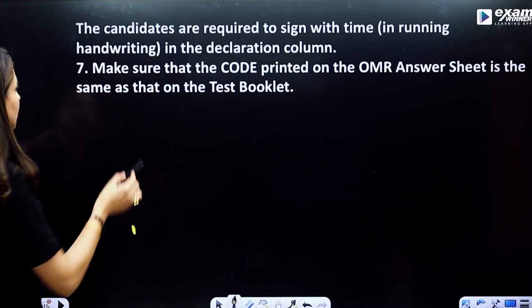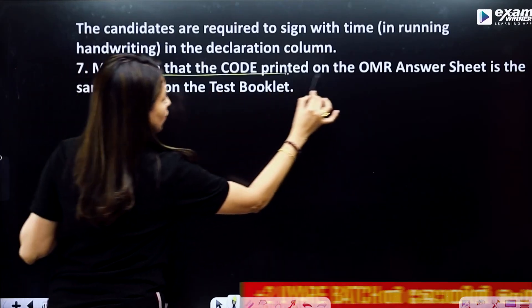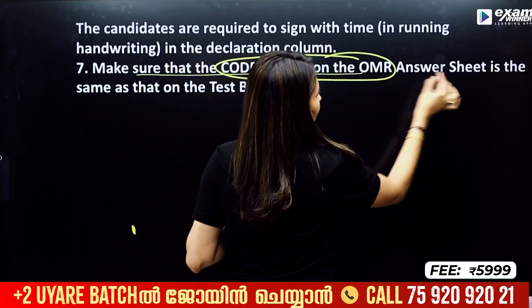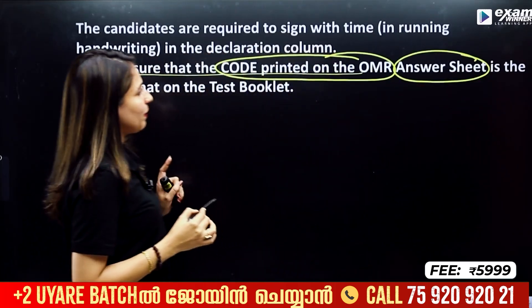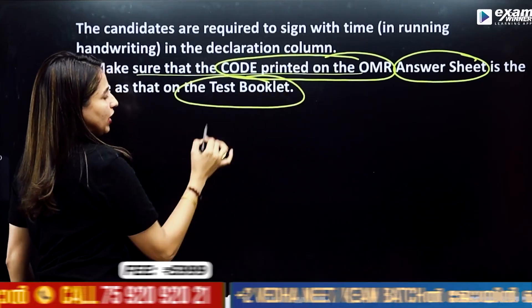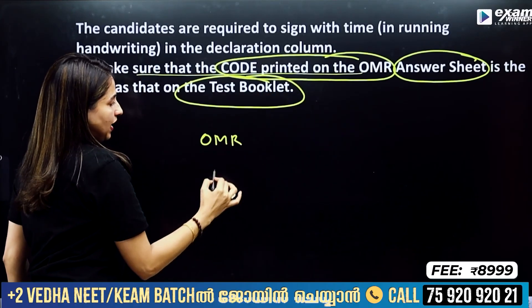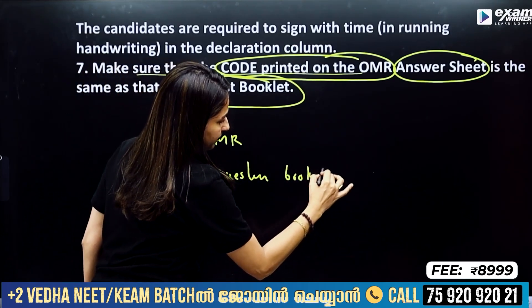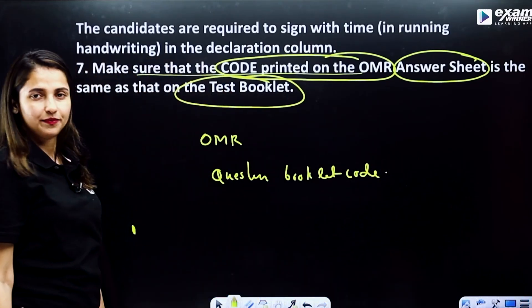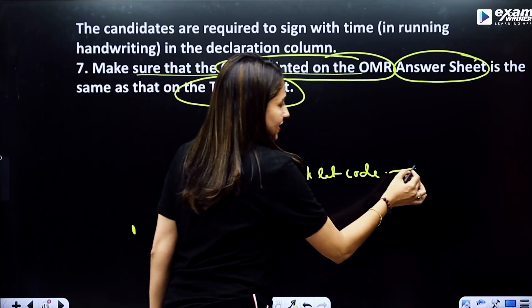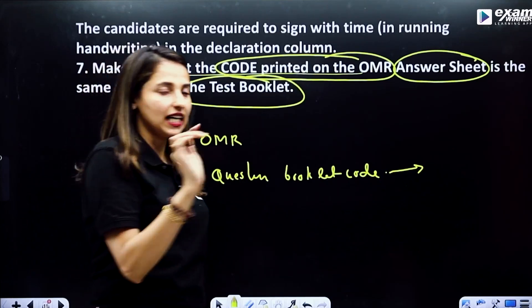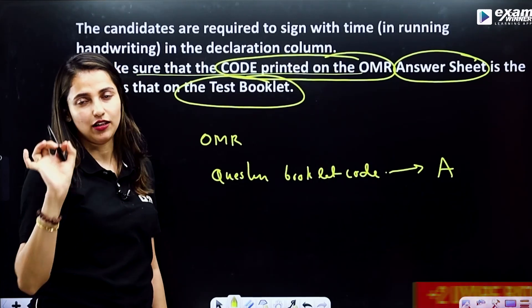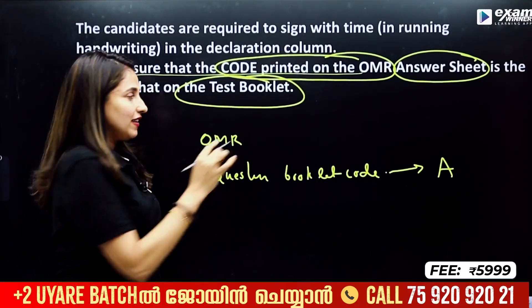The candidates are required to sign. Make sure that the code printed on the OMR answer sheet is the same as that on the test booklet. In the OMR code section, use the same question booklet code. If your question paper booklet shows code A, then fill bubble A on the OMR sheet. The code is very important — ensure it matches.